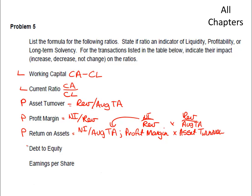Debt to equity is a solvency ratio. It is total liabilities over total shareholders' equity, and it basically looks at the proportionality of who controls the company and how much risk there is. Earnings per share is net income divided by the number of shares outstanding, giving you a marker for the profit per share. And those are the ratios.